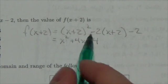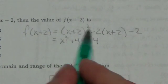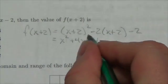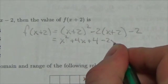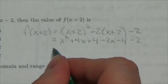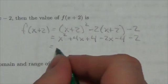If you're wondering where the 4x came from, it's because this is x plus 2 times x plus 2 and you have to expand that out. The negative 2 here distributes, so negative 2x minus 4 when you distribute that through, and the minus 2 at the end. Now we just group together like terms.